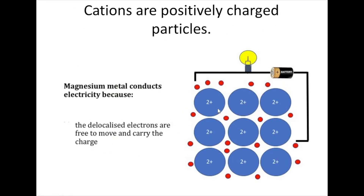Cations — if you see the word cation, that just means positively charged ions. You can see the delocalized electrons here, and because they can move, the metal can conduct electricity.